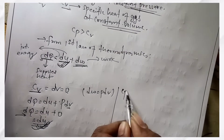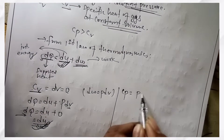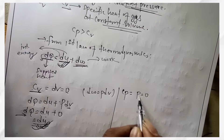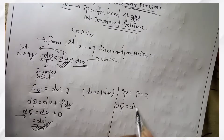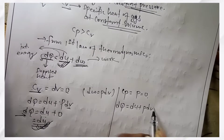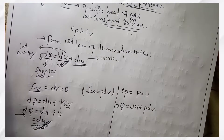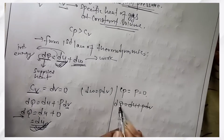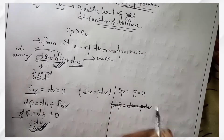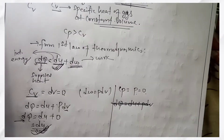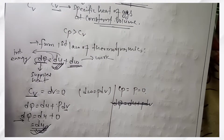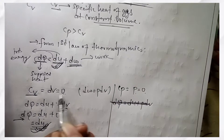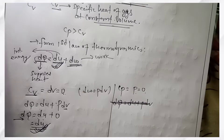Now, what happens at constant pressure — the Cp case? The pressure is constant, so the formula is dQ equals dU plus P·dV. This is the constant pressure condition. When heat is supplied, the gas expands and work is done.